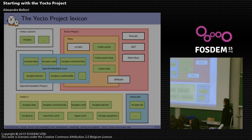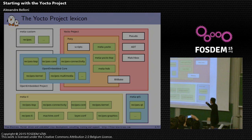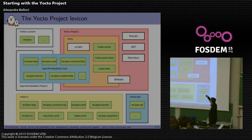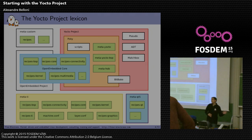The Yocto project includes Poky. Poky itself includes OpenEmbedded-Core — so when you download Poky, you are also downloading OpenEmbedded-Core. It also includes BitBake, a set of scripts that allow you to flash images or create final images like SD card images, and a set of layers with recipes. The Yocto project also handles Pseudo, ADT, MatchBox, and other embedded Linux projects that were no longer maintained when Yocto was created.